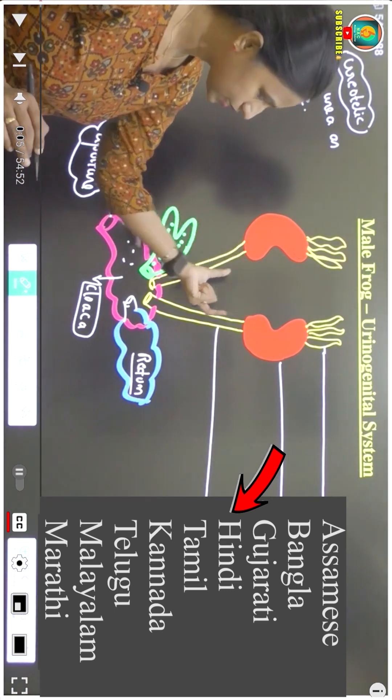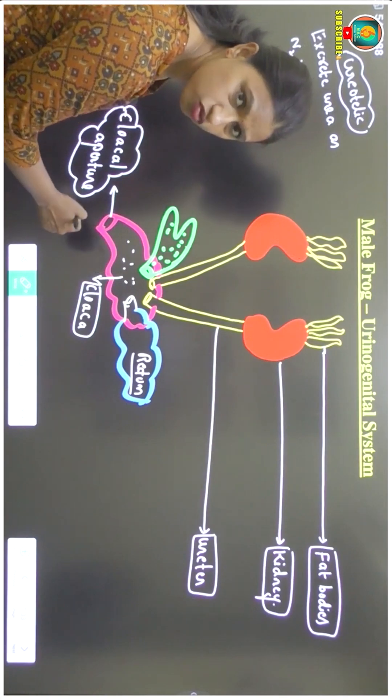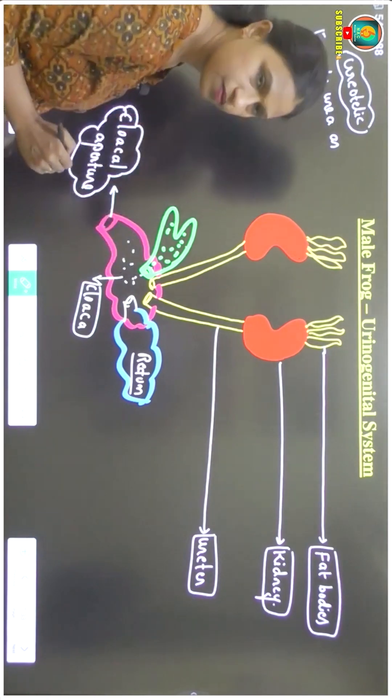First, the urine that carries through the ureter opens into the cloaca. From the cloaca, it will not immediately exit through the cloaca chamber. It will enter into this urinary bladder.